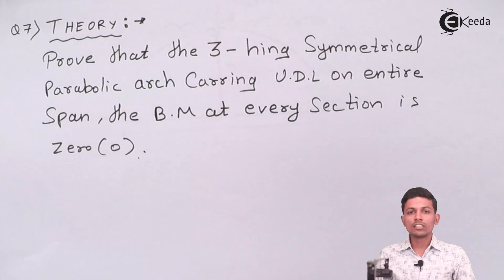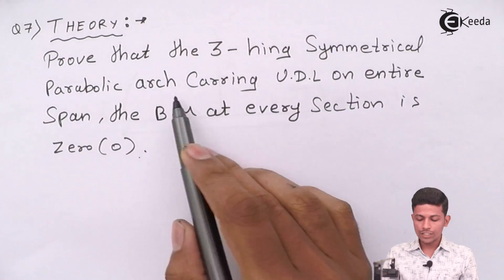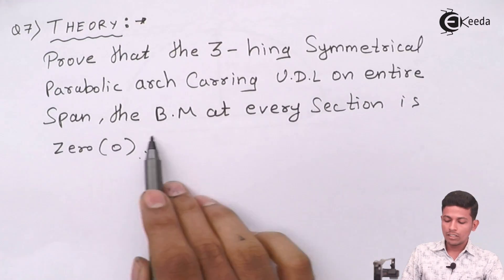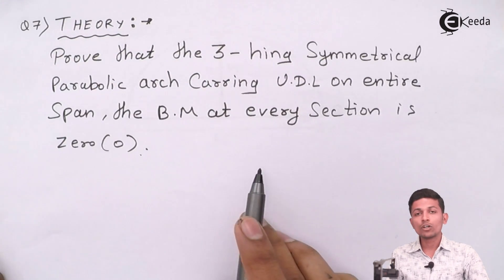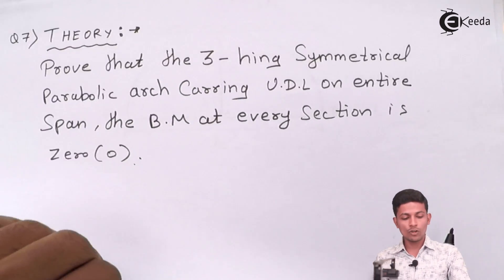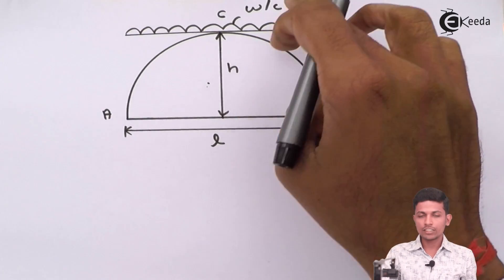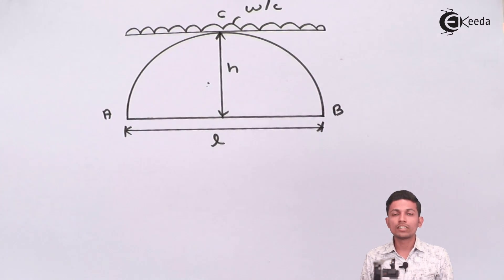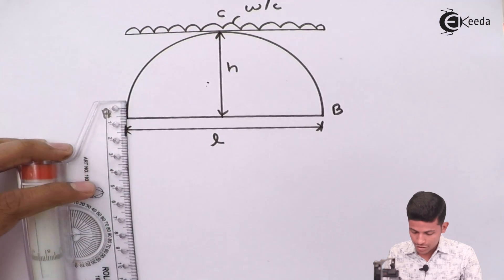This is a given theory question for 5 marks: prove that the 3-hinged symmetrical parabolic arch carrying UDL on the entire span has bending moment equal to zero at every section. The diagram shows span L, rise H, and load W on the entire span between supports A, B, and crown C. Our first step is to find the reactions.